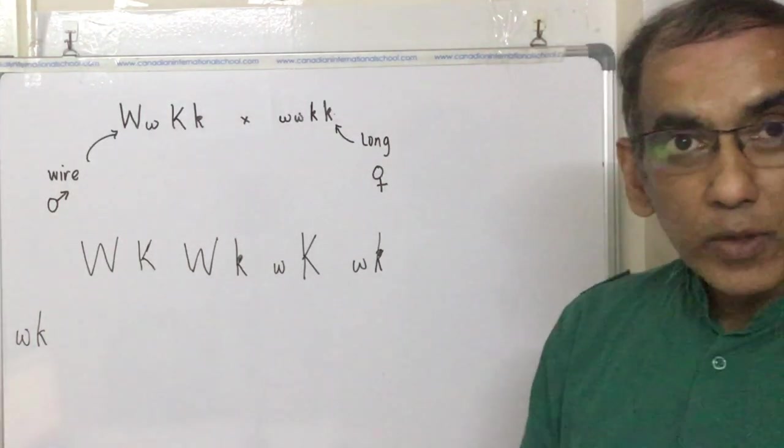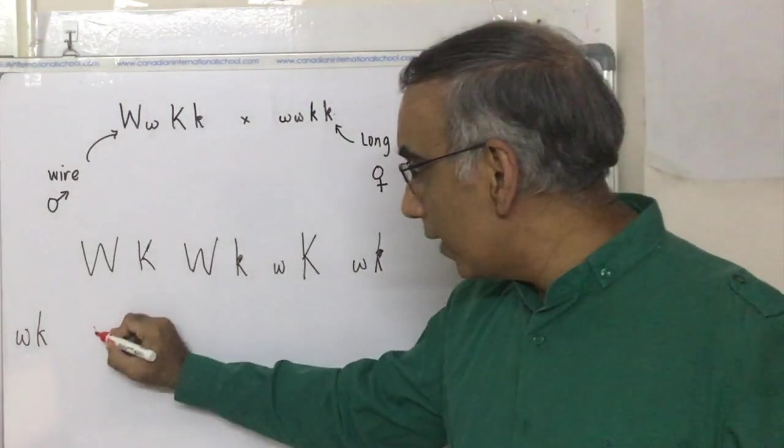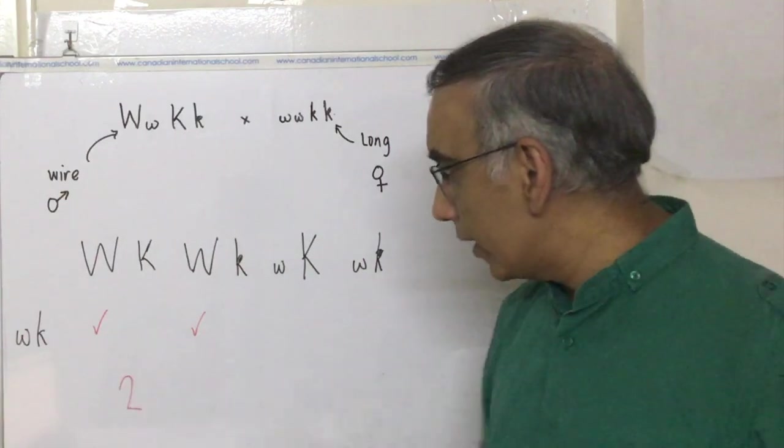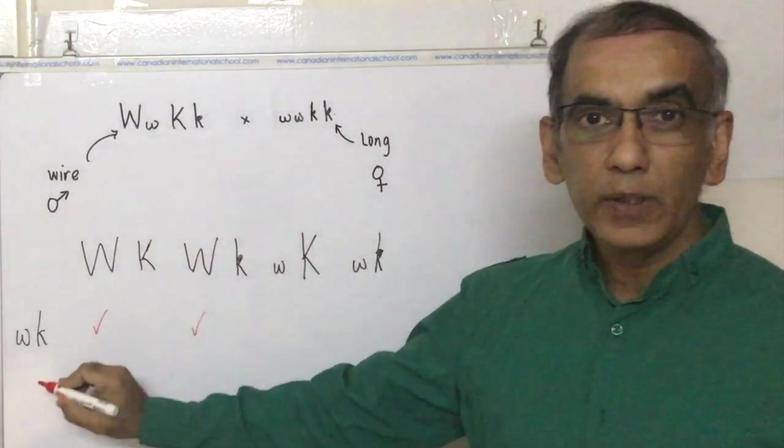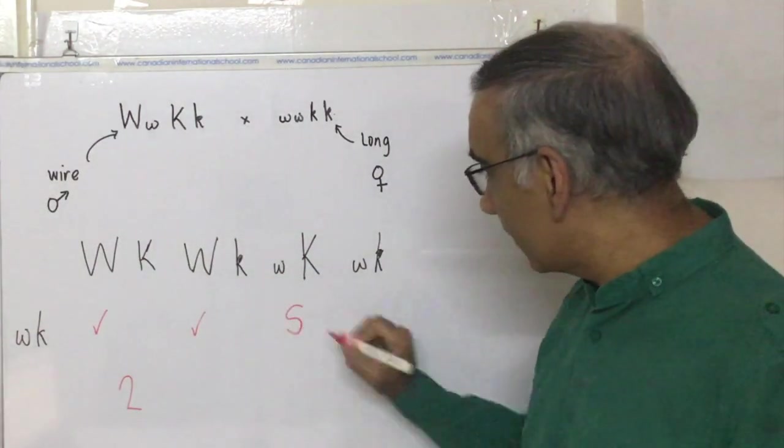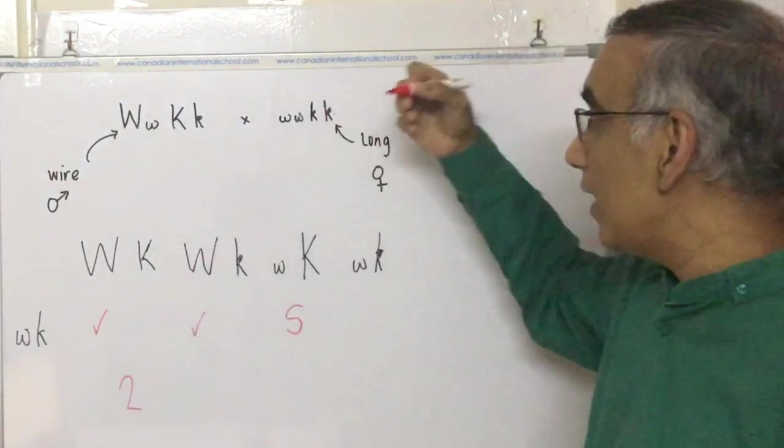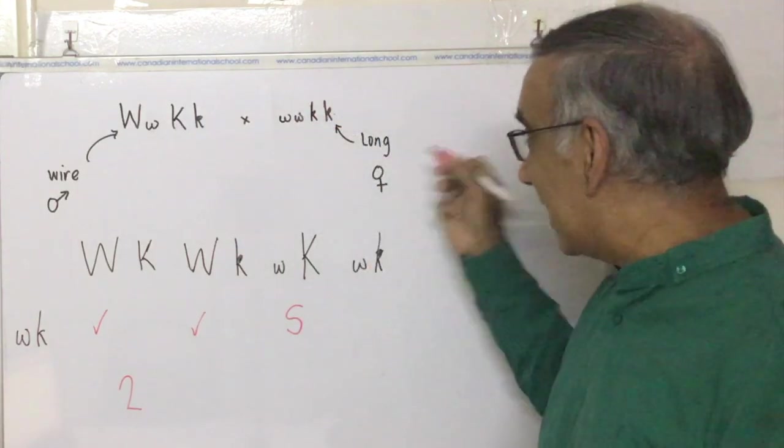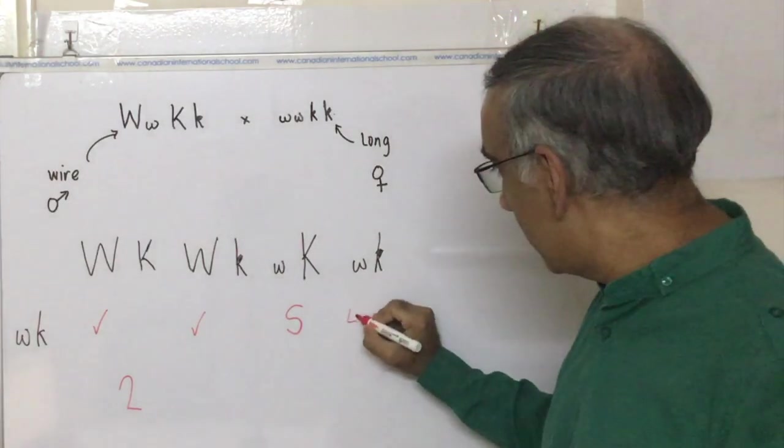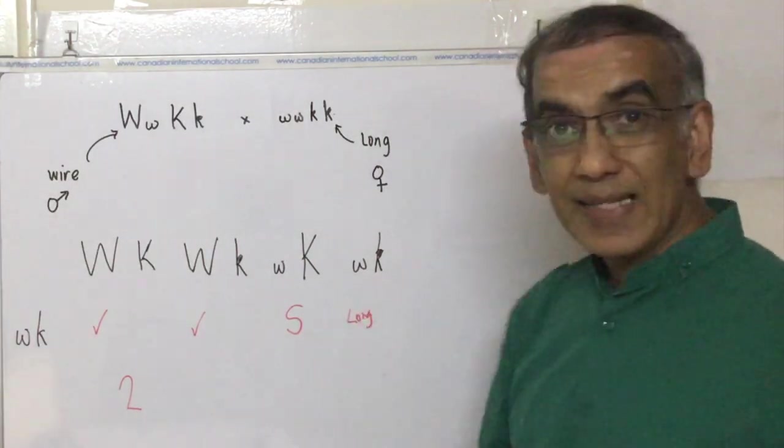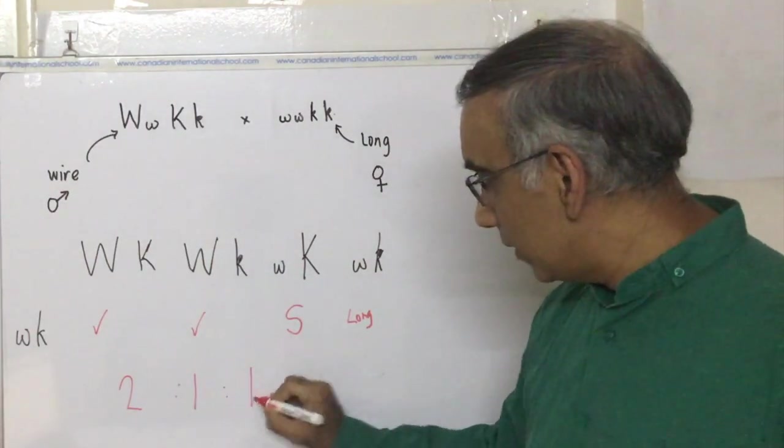Following that reasoning we established previously, the presence of one big W means you have a wire-haired dog. So that's two wire-haired dogs. The presence of a big K along with two small Ws gives a smooth-haired dog. And homozygous here, homozygous here, gives the same genotype as the mother. That is going to give a long-haired puppy. This satisfies the data provided, two to one to one.